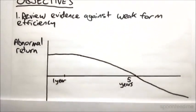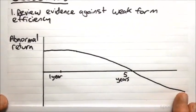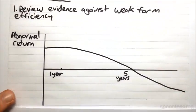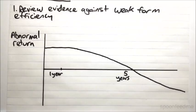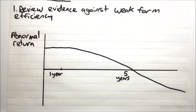In the following graph, I've got the abnormal return earned on some given share or asset over time. If we assume that the market is in fact efficient, or at the very least weak form efficient, then prices should reflect all past price information, which means there shouldn't be any kind of identifiable price trend. If there's an abnormal return on a share, then we should expect that on average the abnormal return will quickly drop back down to zero.